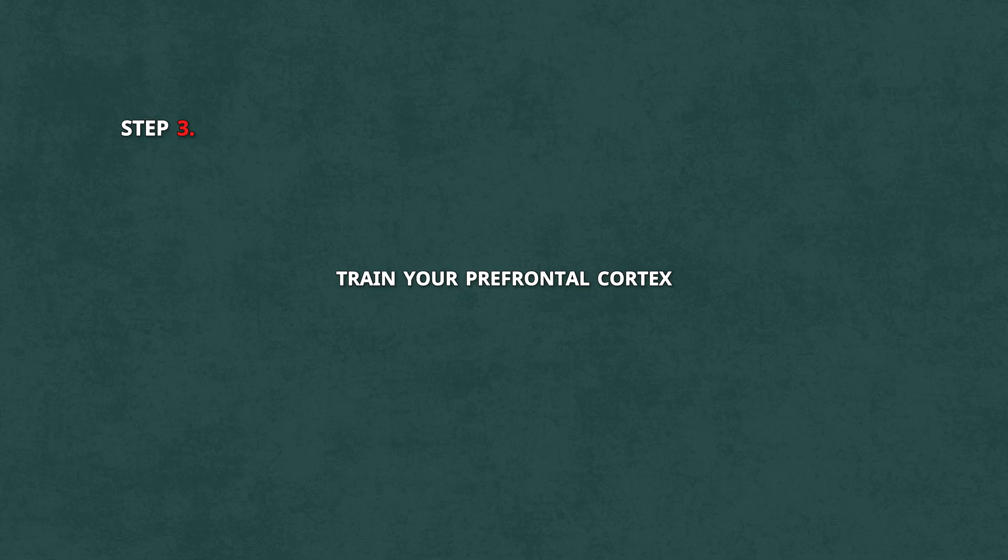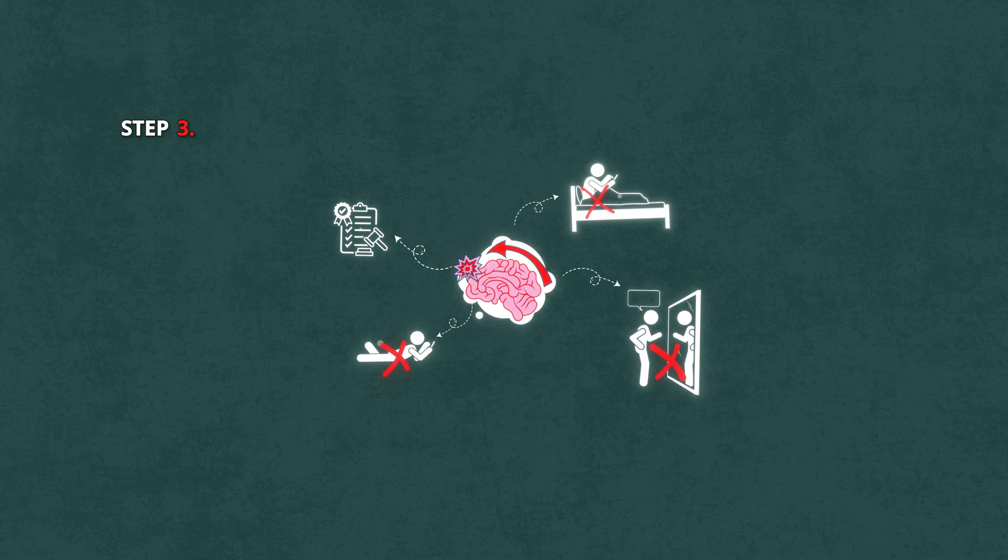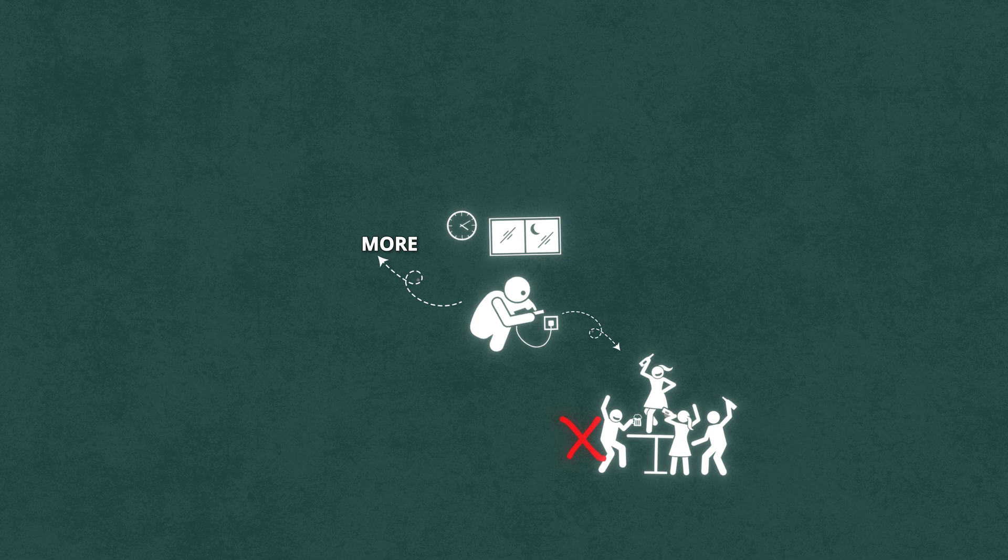Step three, train your prefrontal cortex. Set rules that cut out distractions before they even tempt you. No phone in bed. No quick scroll breaks. No saying yes to things that don't move the needle. Remember, obsession isn't about doing more. It's about doing less of the noise and more of the signal.